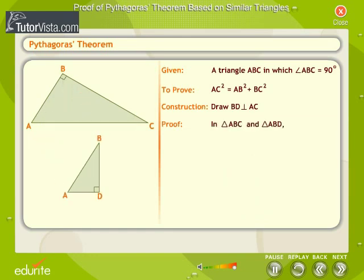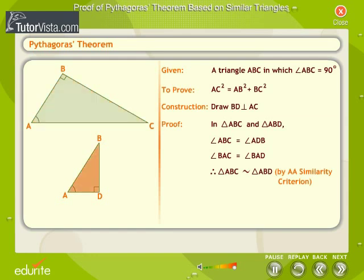In triangle ABC and triangle ABD, angle ABC is equal to angle ADB, since each angle is equal to 90 degrees. Angle BAC is equal to angle BAD, since it is the same angle. Therefore, triangle ABC is similar to triangle ABD by the AA criterion of similar triangles.